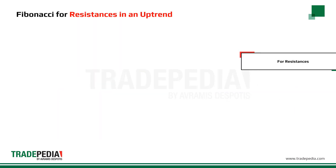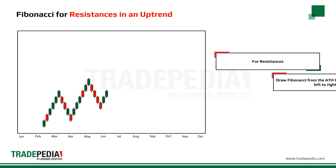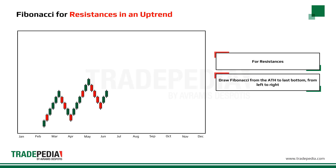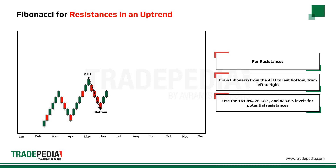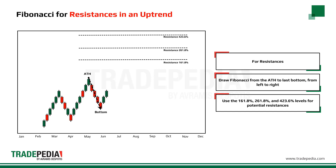For resistances in an uptrend, draw Fibonacci from the all-time high to the last bottom, always from left to right. Use the 161.8%, 261.8%, and 423.6% levels for potential resistances.